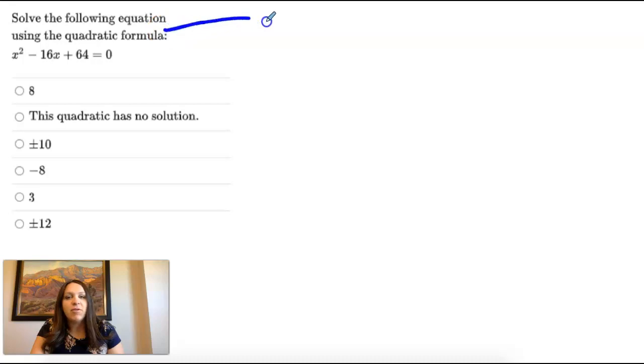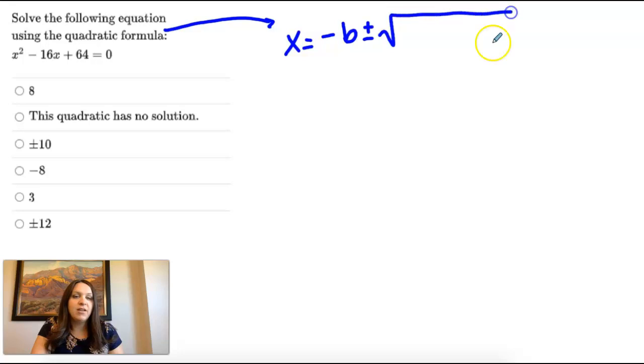So it's a long formula that we get from completing the square of standard form. So we're not going to do that. But it's negative b plus or minus the square root of b squared minus 4ac, and we take this whole thing divided by 2a.